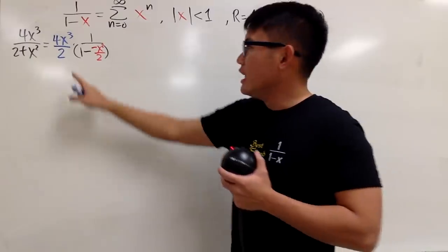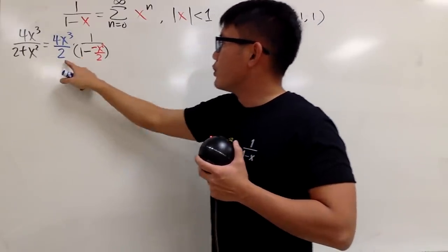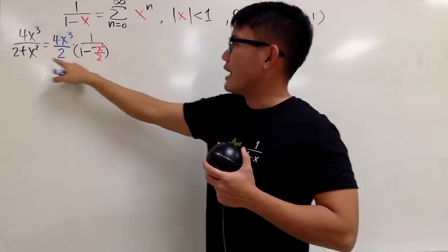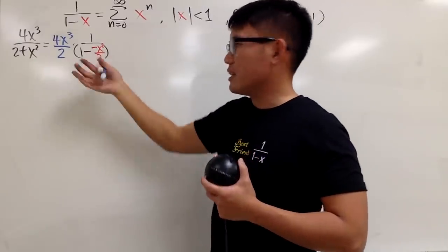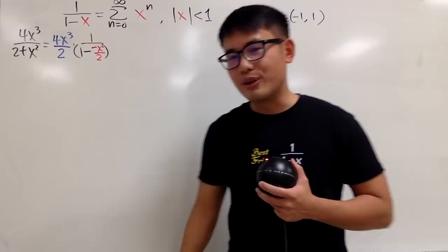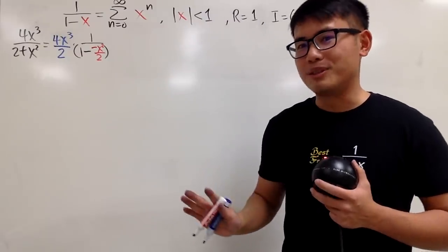You can do a quick check. If you multiply in the 2, 2 times 1 is 2. 2 times this, the 2's cancel, you get that back. And also negative times negative, we got this back. So you have to make some change right here by doing some algebra. And the life will be so wonderful.